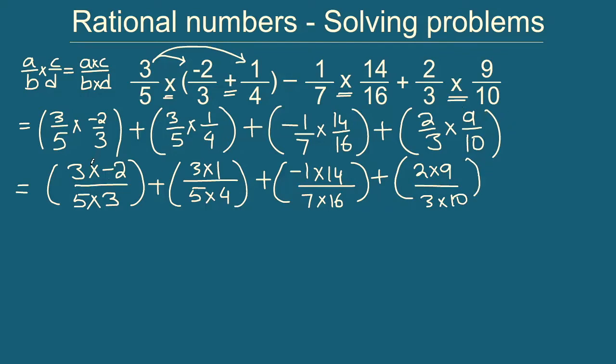Now we will see that we have a lot of common factors in numerator and denominator. For the first term, the 3 and 3 will cancel out, so we will be left with simply minus 2 by 5. For the second term here, can we cancel any of the terms from numerator to denominator? We can't. So we will simply write this as plus 3 times 1 is 3 by 5 times 4 is 20. What about the third term?